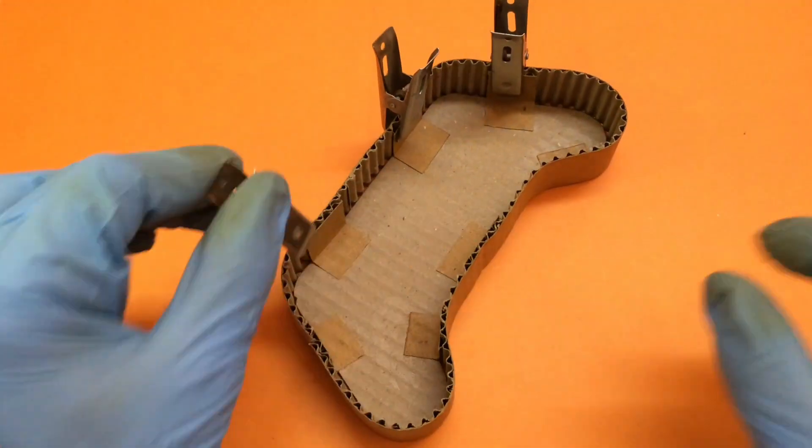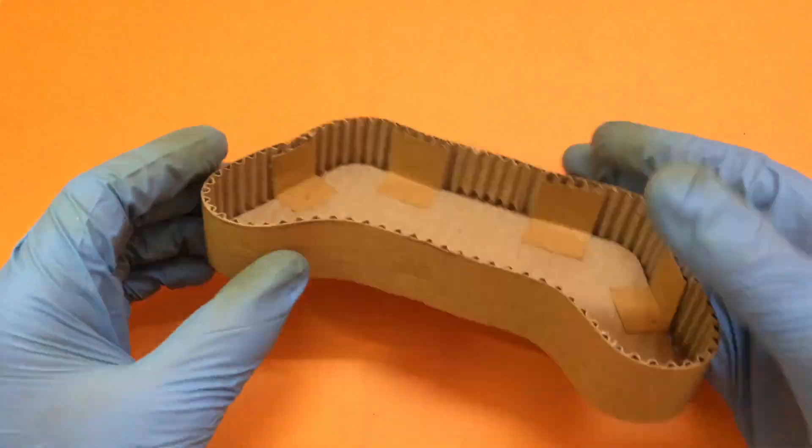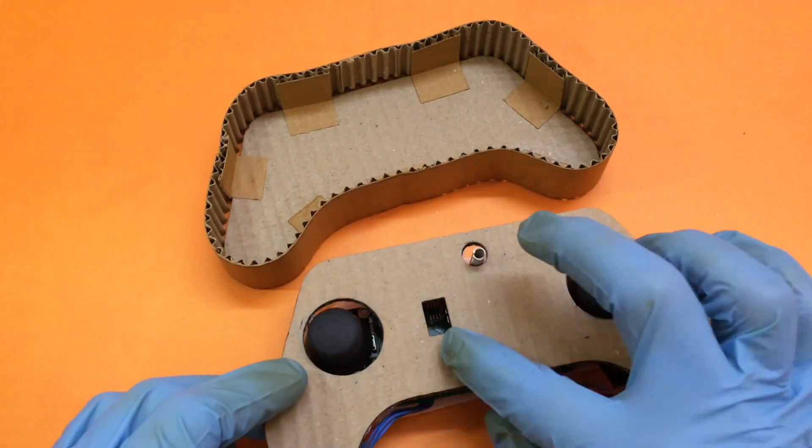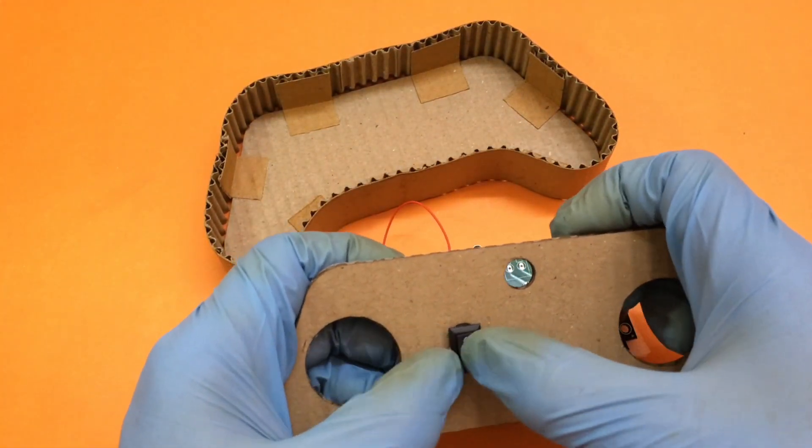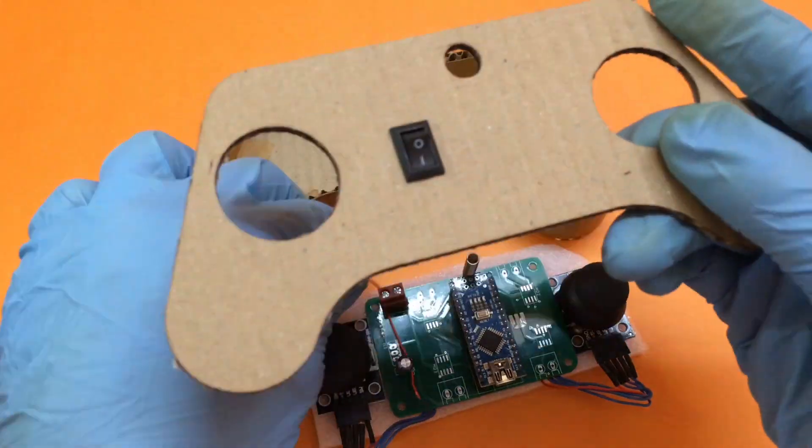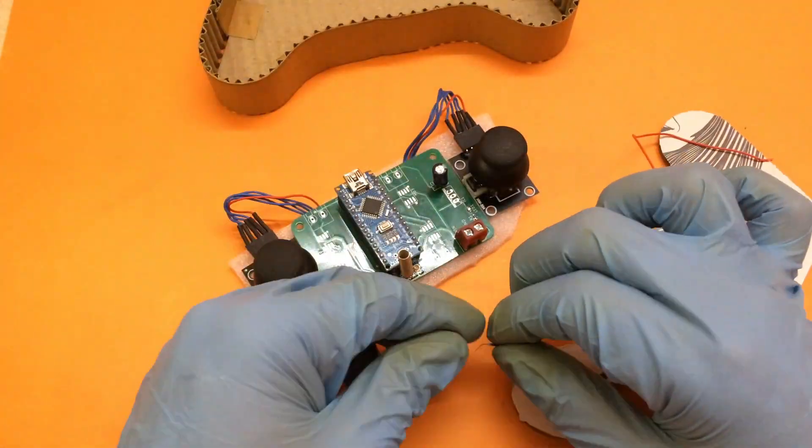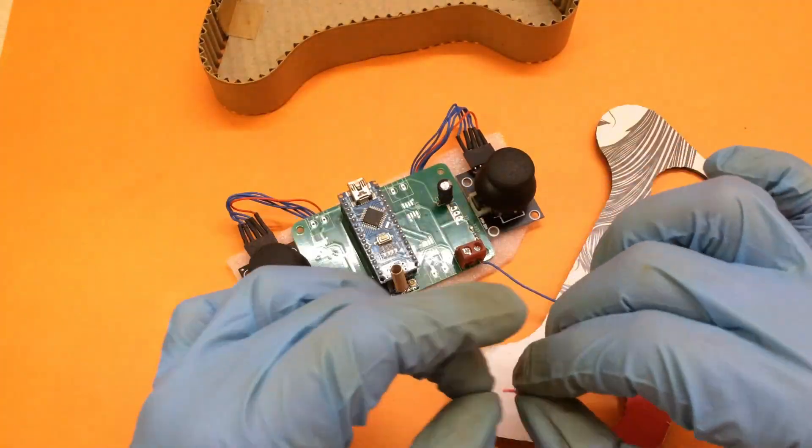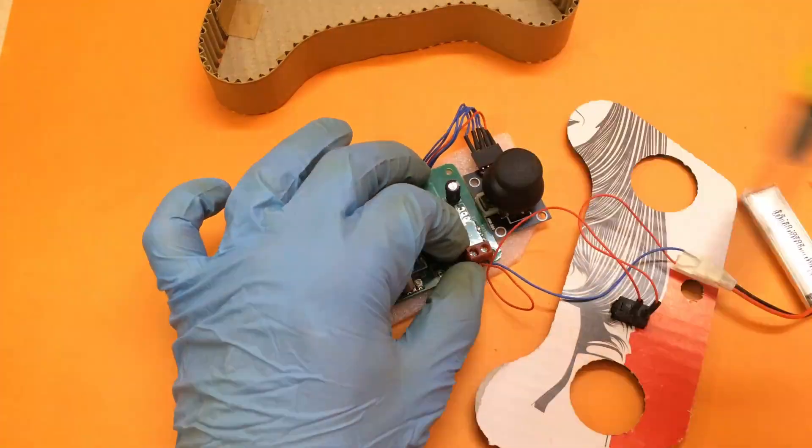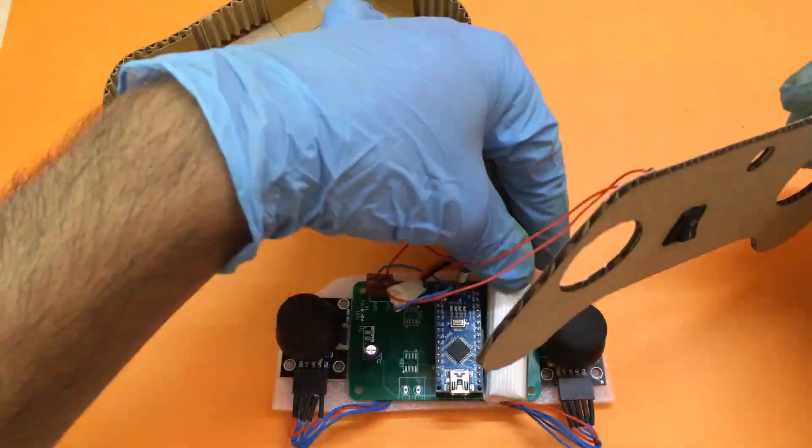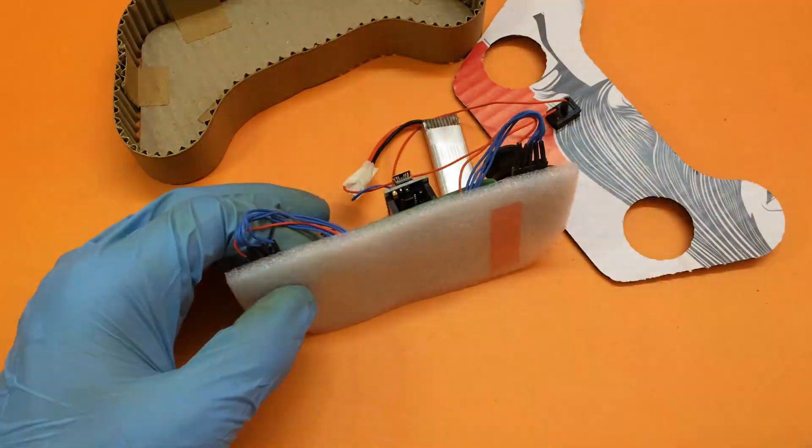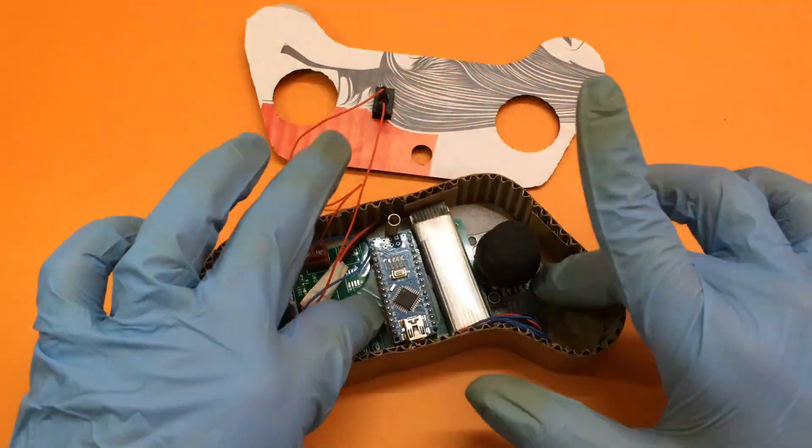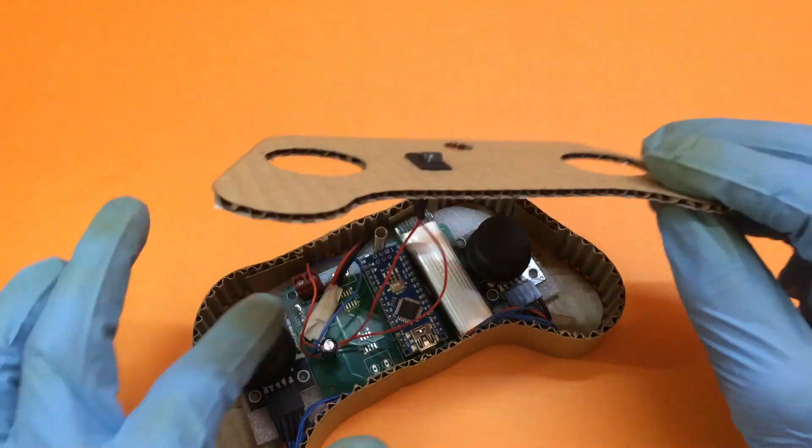So our joystick body is ready so we can remove the clips and move to the electronics of the joystick. I have attached the joystick and the circuit to a foam sheet which can be mounted inside the body using some double-sided tape. After attaching the battery and the switch place the circuit inside the body and cover it with the top part. The top part will snugly fit inside the cover.